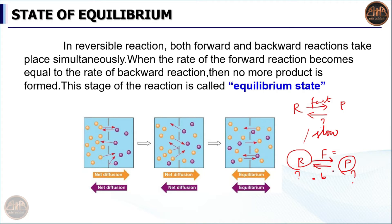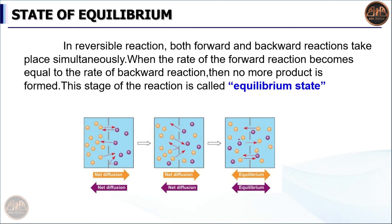In the picture showing the reversible reaction, the reactant and product are shown with a color difference. First, the reactant undergoes the forward reaction to form the product. Then the product acts as a reactant in the backward reaction. In this stage, forward and backward reaction speeds are equal, as you can see in the picture. No more net reactions take place.